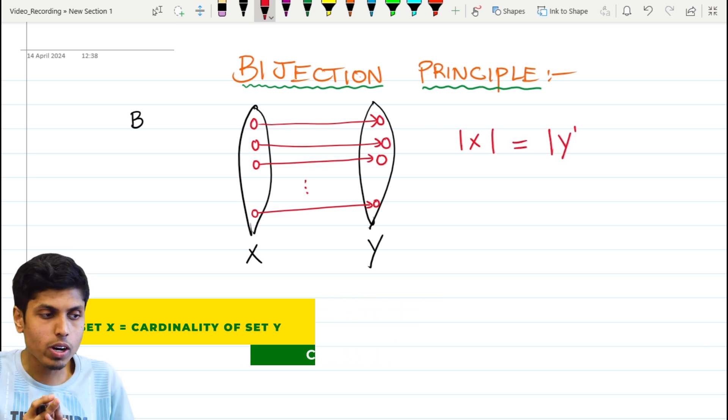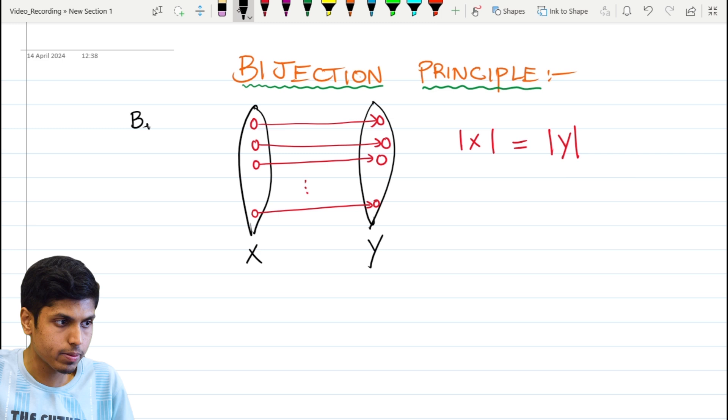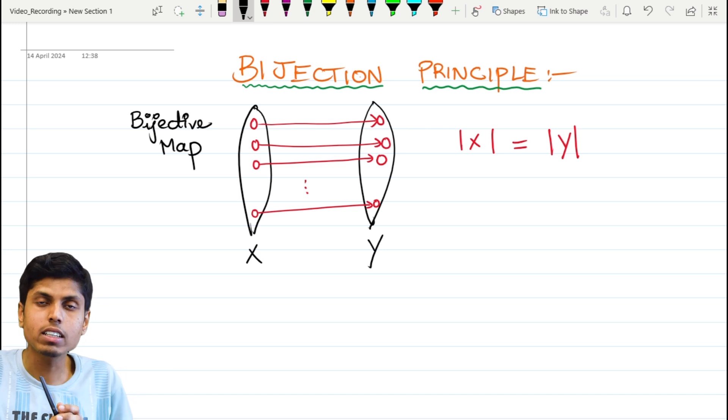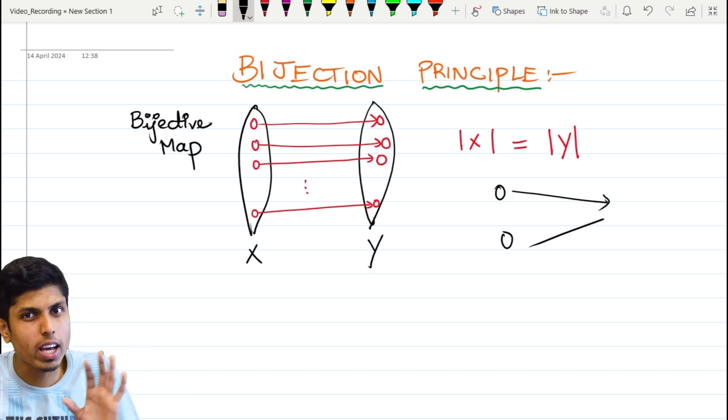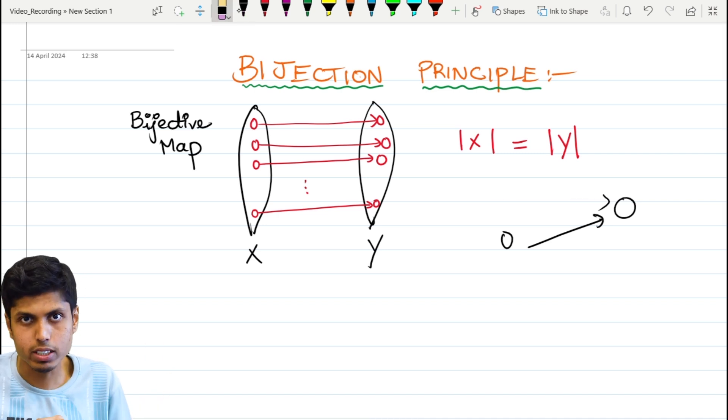Just reminding you again, a bijective map is a type of map in which each element of the domain has a unique image in its codomain. That is, no two elements map to the same element in the codomain, and all elements have a pre-image in set X. There are no elements in Y which are left over.